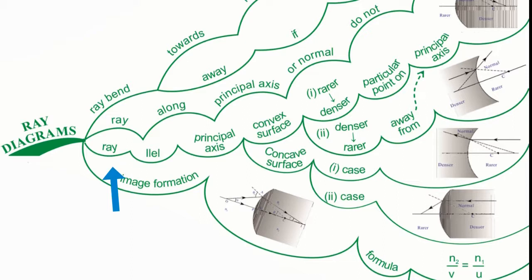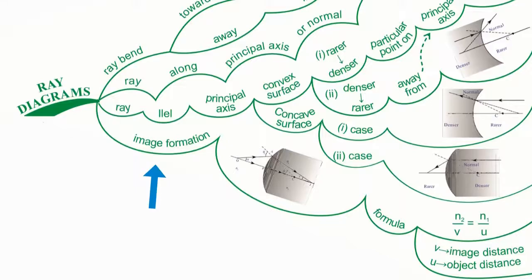Convex Surface, Rarer to Denser, Particular Point on Principal Axis, Denser to Rarer, Away from Principal Axis, Concave Surface, First Case, Second Case, Image Formation, Diagram, Formula. V is the Image Distance, U is the Object Distance.